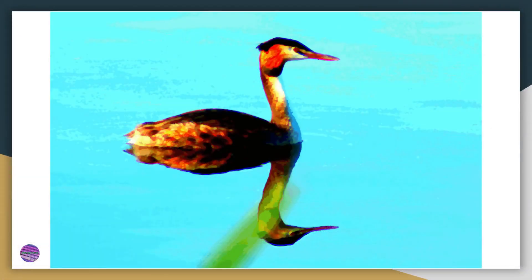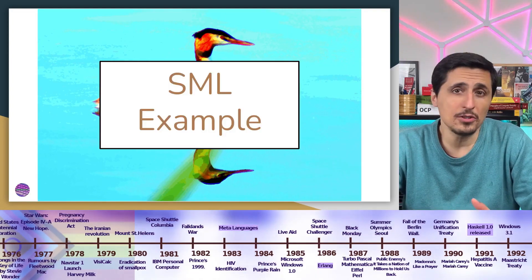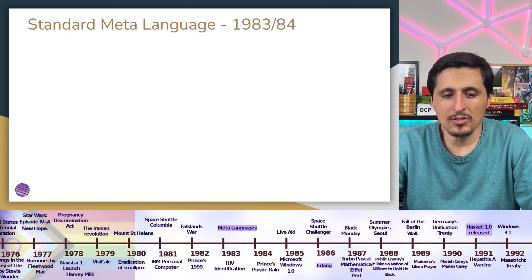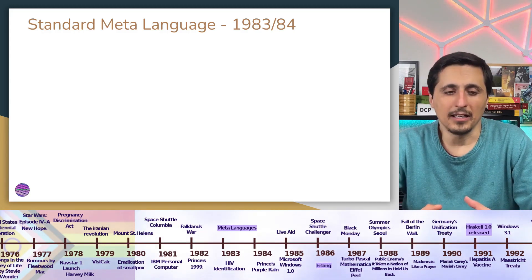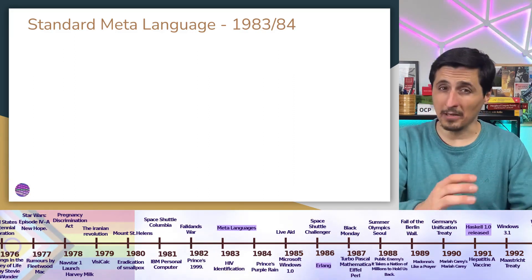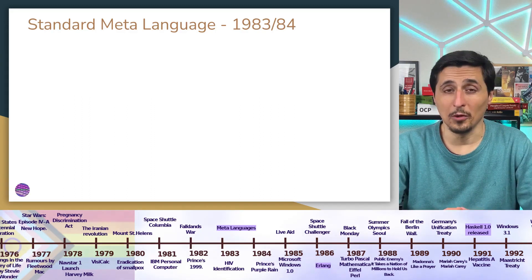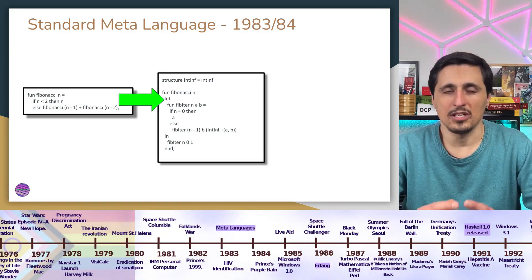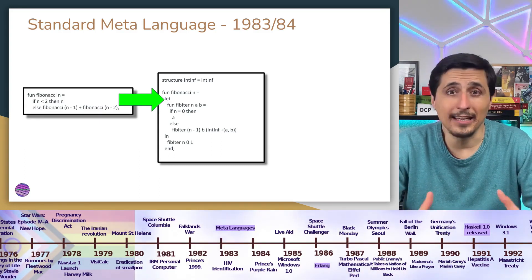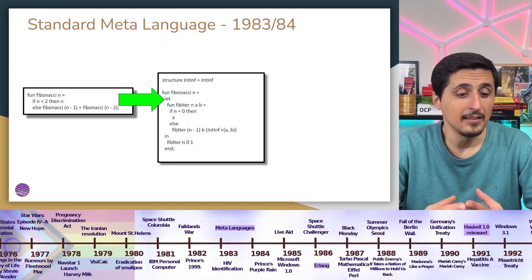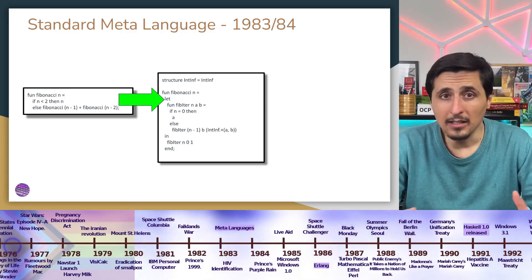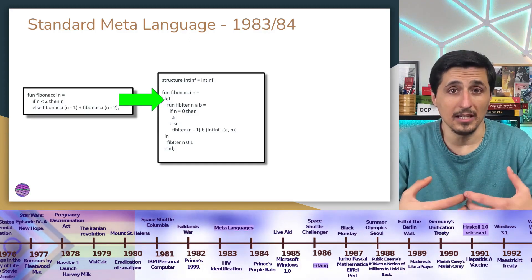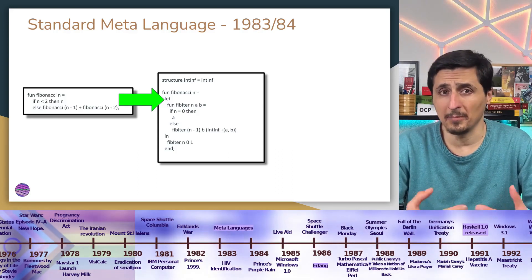Now let's have a look at a language called SML — the Standard Meta-Language, of which there are many variations. The one we are looking at is Standard Meta-Language New Jersey, which came around 1983–1984, though it actually began much earlier in 1970. The Standard Meta-Language is one of the languages that introduced the concept of immutability and how good it is for developers. The idea is that as we create a variable, it would not change its value during the runtime of the application or during its own lifetime. This added predictability to the code.